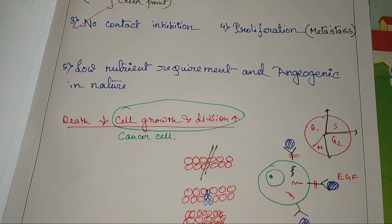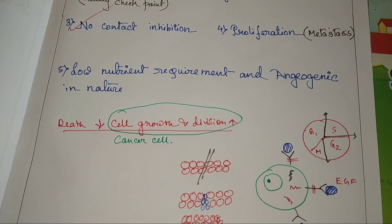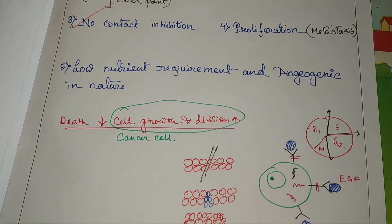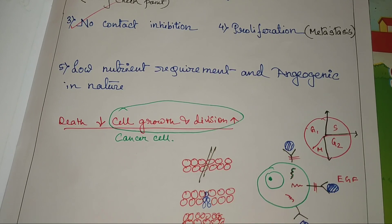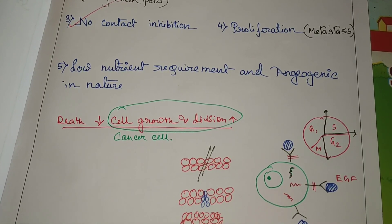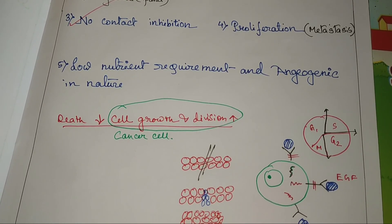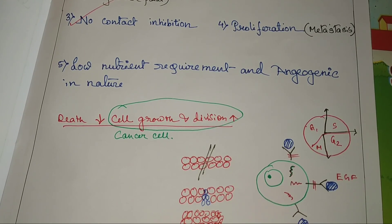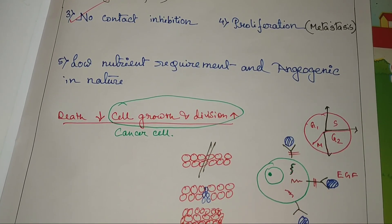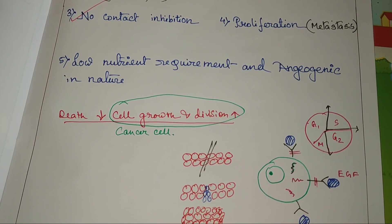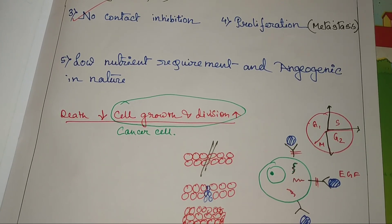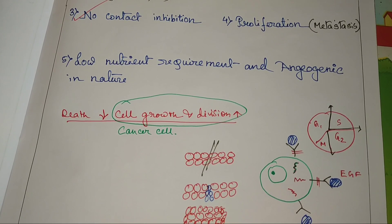The next characteristic is proliferation or metastasis. After invading our tissue, cancer cells can go from one place to another — this is also known as migration. This is a very major characteristic that is good for the cancer cells but worse for us. Because if cancer is growing in a particular region, we can operate on it. But when it spreads all over the body, we can't recognize which cell is normal and which is cancerous. So we would need to kill all the cells, and the person would die. They migrate from one place to another, showing metastatic character.